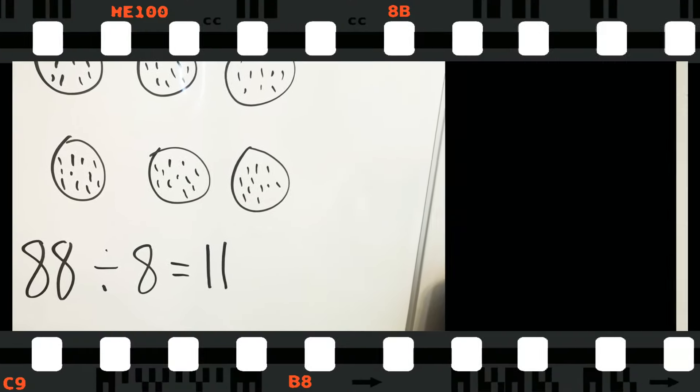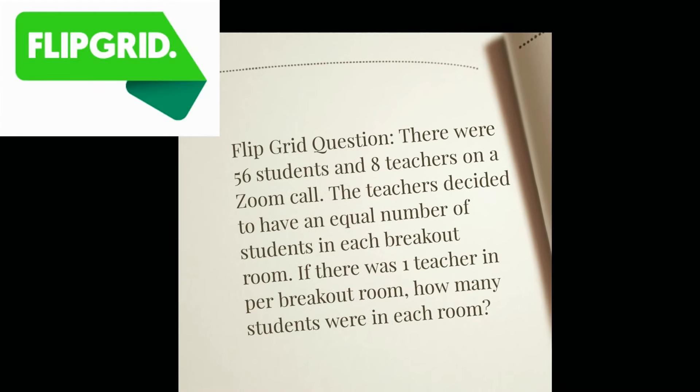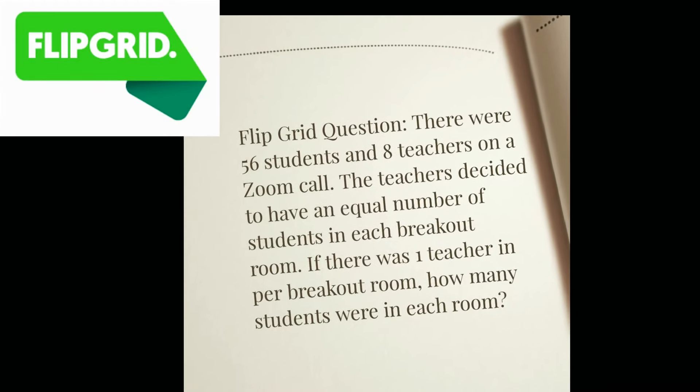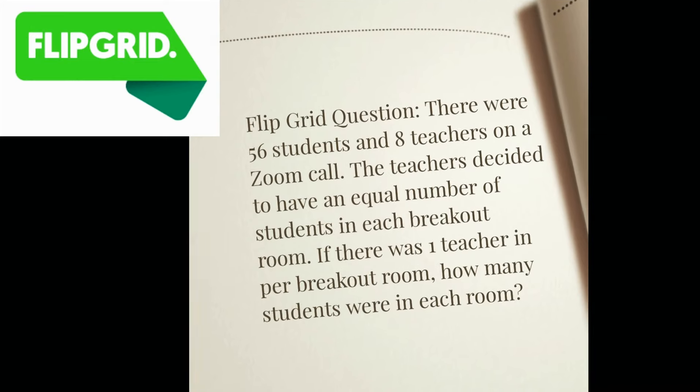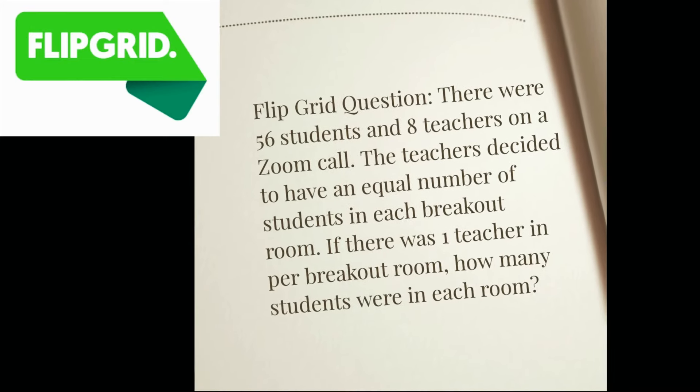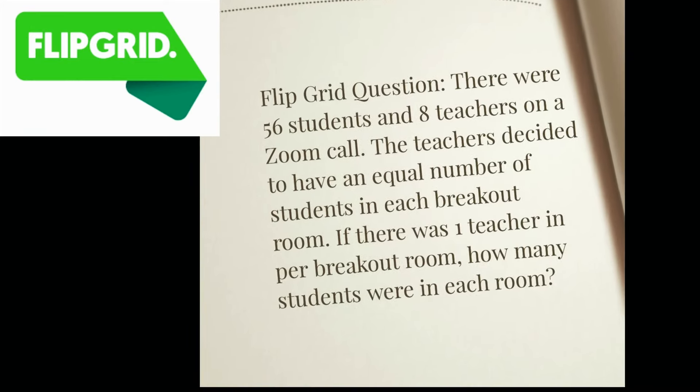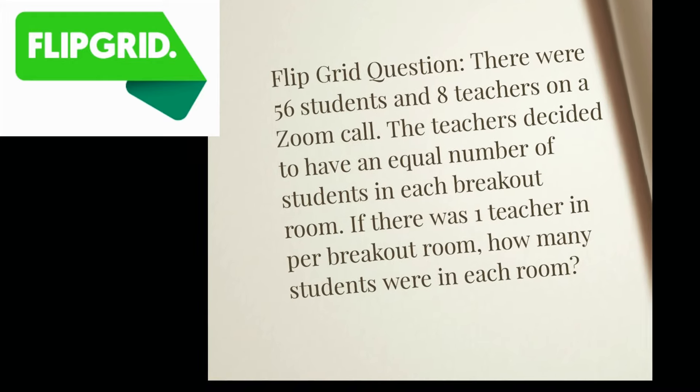Now time for our flip grid question of the week. There were 56 students and eight teachers on a Zoom call. The teachers decided to have an equal number of students in each breakout room. If there was one teacher per breakout room, how many students were in each room?